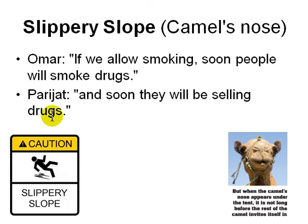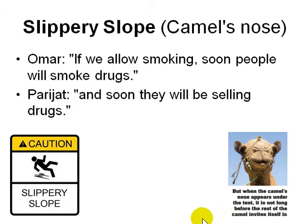Next is the slippery slope, also called the camel's nose. When a camel's nose appears under the tent, it's not long before the rest of the camel comes in. For example: 'If we allow smoking, soon people will smoke drugs.' And then 'Soon they will be selling drugs also.' That's a slippery slope — you extend the argument to situations not even imagined and use it to scare people.